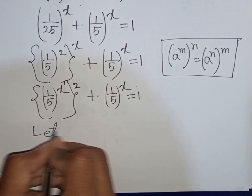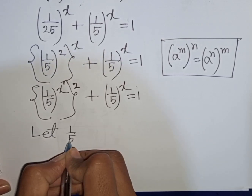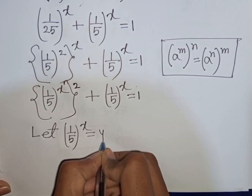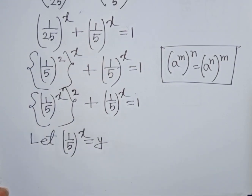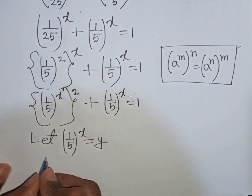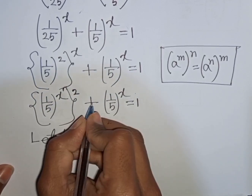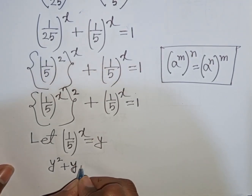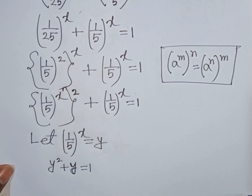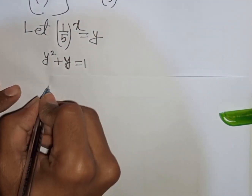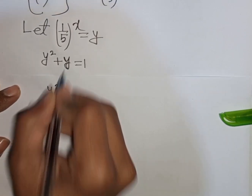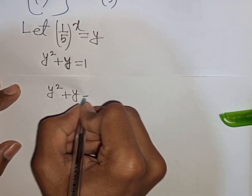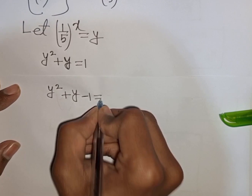Let (1 over 5) bracket power x be substituted by y. So our equation will be y squared plus y equals 1. Taking 1 to the left side gives y squared plus y minus 1 equals 0.